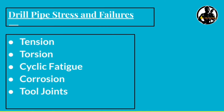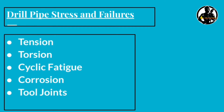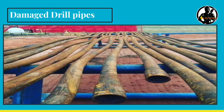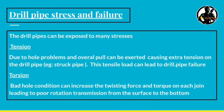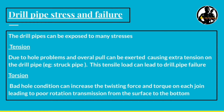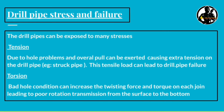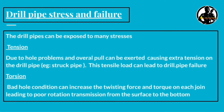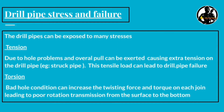Drill pipe can be exposed to many stresses: tension, torsion, cyclic fatigue, corrosion, and tool joint damage. Tension: due to hole problems, the overall pull can be exceeded, causing extra tension on the drill pipe — for example, a stuck pipe — leading to failure. Torsion: bad hole conditions can increase existing torque on each joint, leading to poor rotation transmission from surface to bottom.